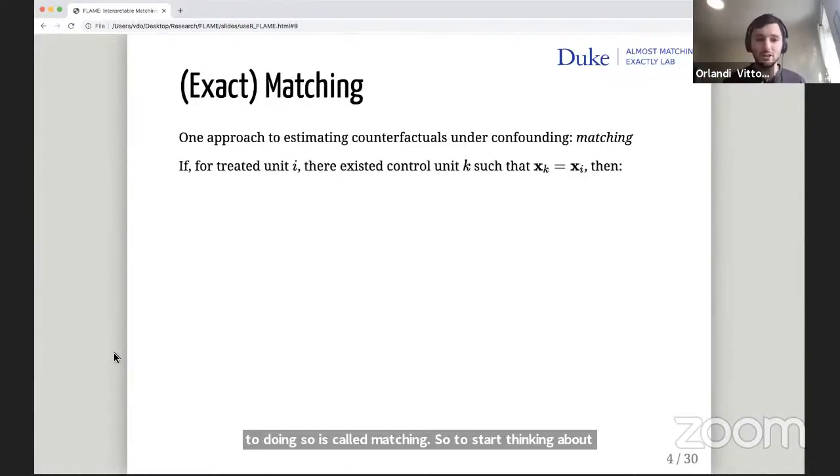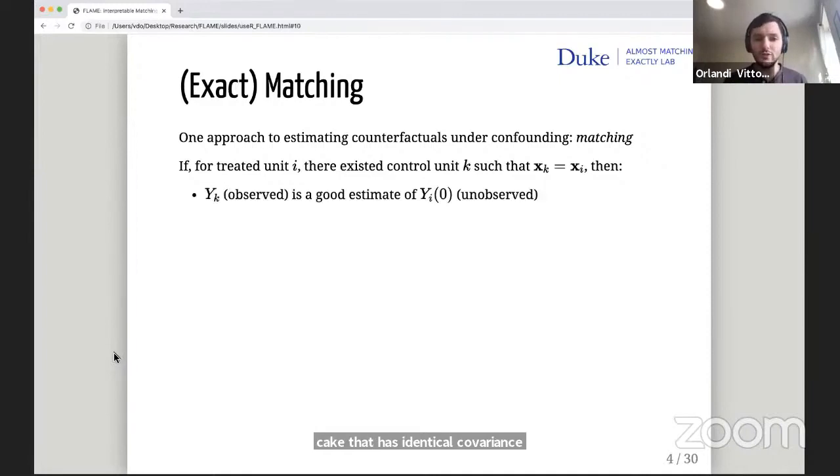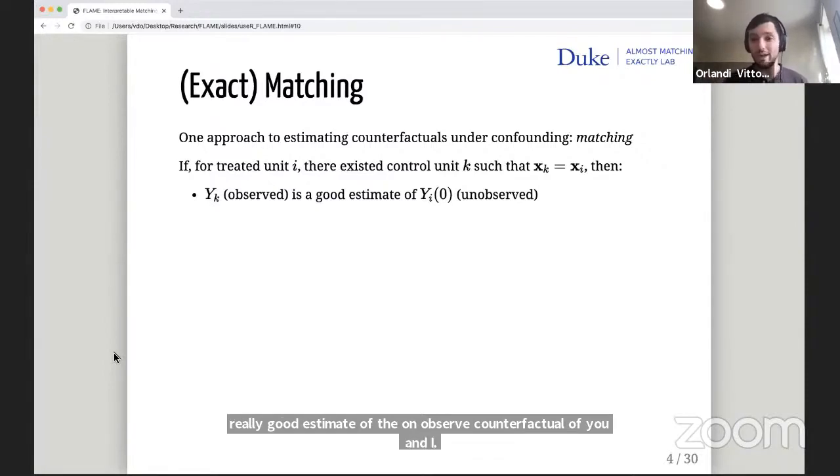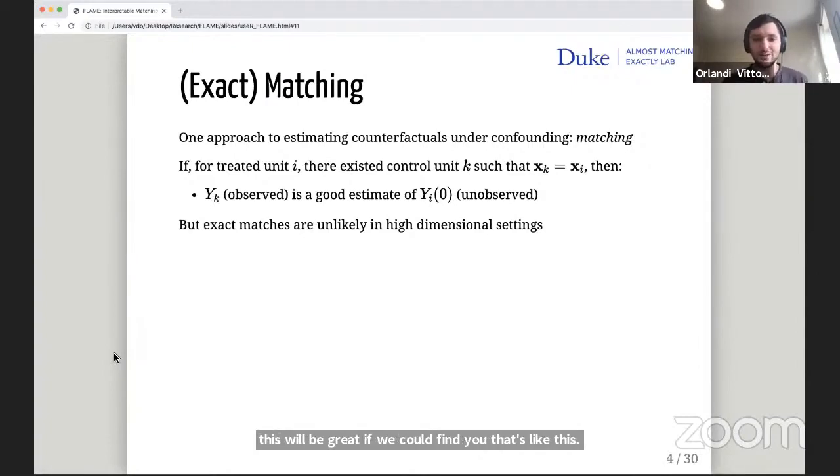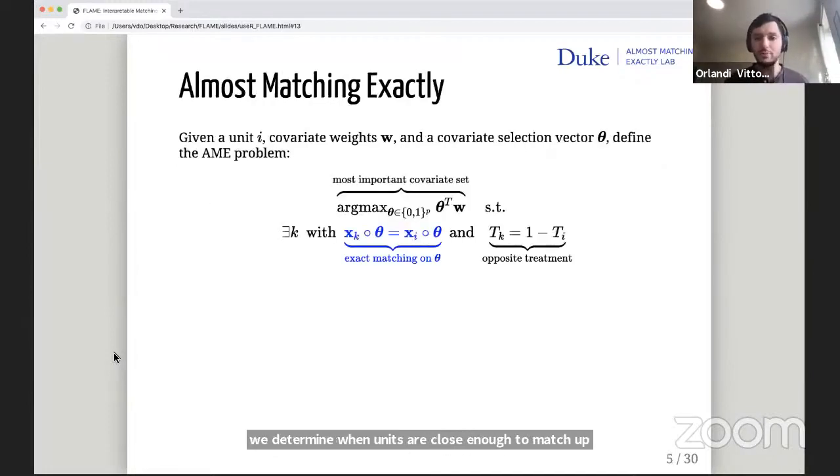Pretend you're trying to figure out the effect of some drug on some health outcome. It might be the case that people that are sicker in general as captured by the covariates are more likely to take the drug. So a naive analysis might conclude that the drug is actually harmful. But actually it's just that you have this selection issue which is biasing your effects. You need to adjust for this somehow, and one approach to doing so is called matching. So let's imagine we have a treated unit i, and in our data set we can find a control unit k that has identical covariate values, an identical twin. Well then intuitively, yk, which is the observed response of unit k, is a really good estimate of the unobserved counterfactual of unit i. But exact matches in high dimensional settings are quite unlikely, and so we're going to have to settle for some sort of approximate equality.